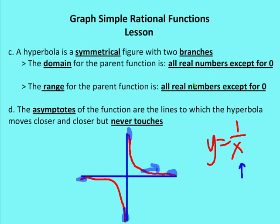So remember: domain is all real numbers except for zero, and the range is all real numbers except for zero. This is the parent function — the basic function y is equal to one over x. I can translate this; we'll talk about this in a couple minutes. I can move the parabola around so the asymptotes change, and then the domain and range will also change as well.